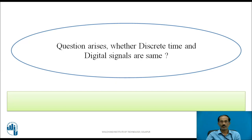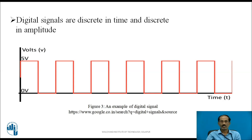A question arises: are discrete time and digital signals the same? The answer is no. In digital signals, there are discrete time and discrete amplitude. In discrete time signals, the amplitude is discrete in time but continuous in amplitude — every interval of time there is an amplitude, but that amplitude is not constant. Whereas in digital signals, the amplitude is constant — for example, either 0 or 5 volts. At every interval, the amplitude is either high (always 5 volts) or low. That is the only difference between digital signals and discrete time signals.